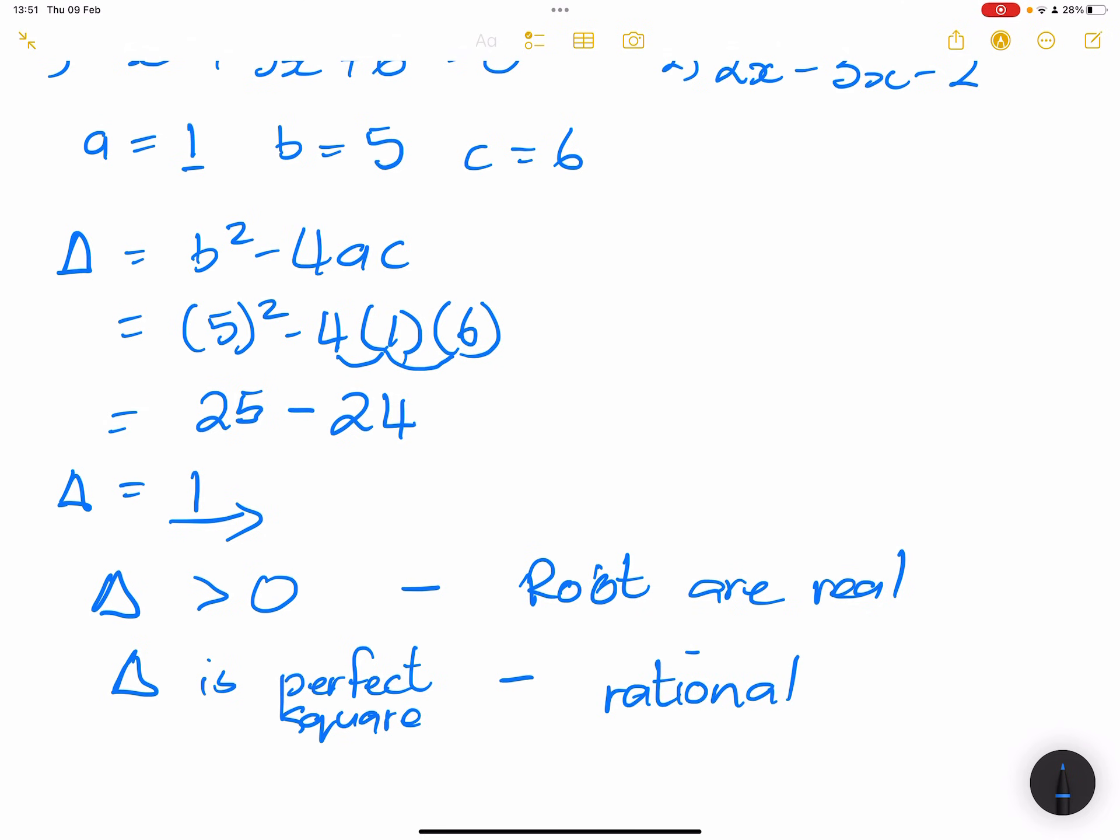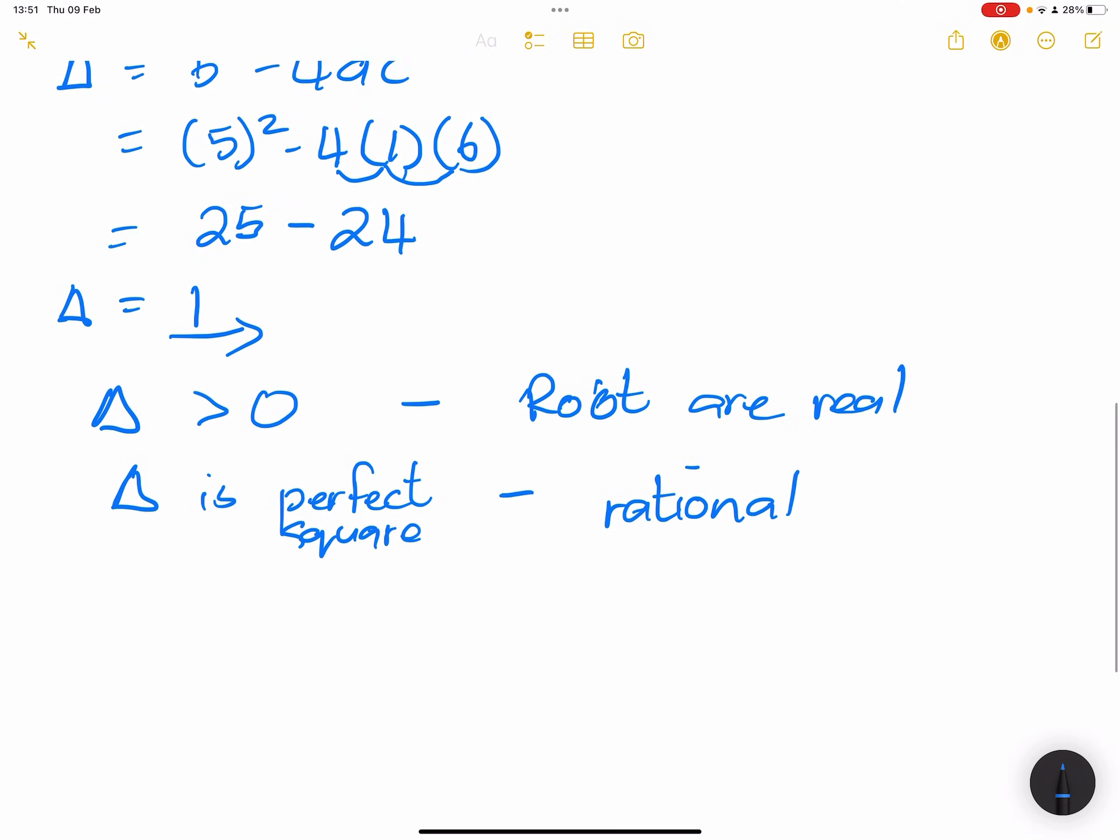It means that in this case we can write the number as a fraction, an integer over an integer. We also note that delta is not zero, so delta is not zero. When delta is not zero it means that the roots in this case are unequal.